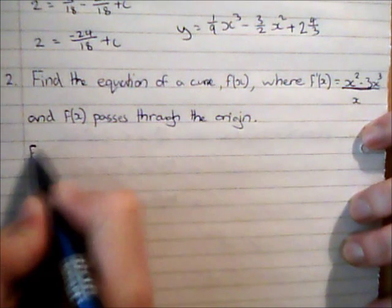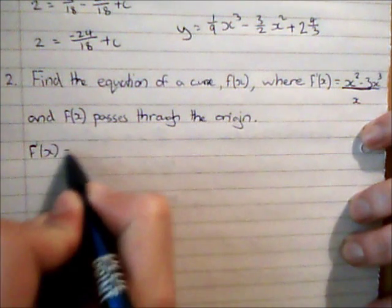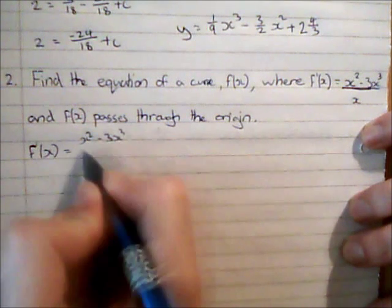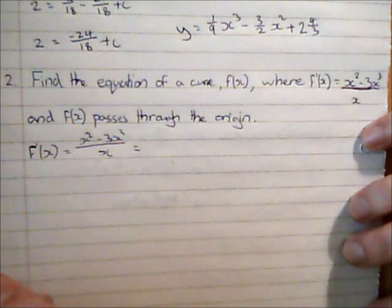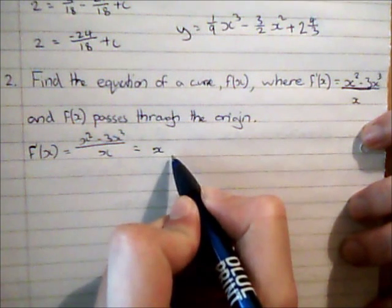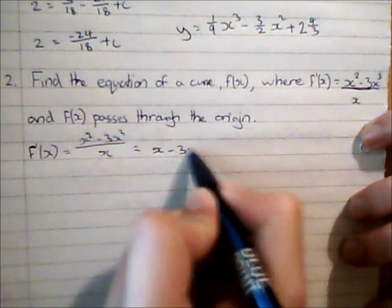So f dash x is equal to x squared minus 3x cubed all over x. So I can divide through by x to give me an expression for f dash x of x minus 3x squared.